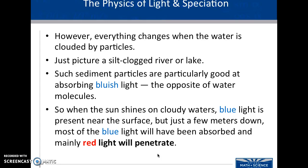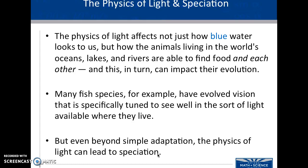This changes when the water is clouded by particles. Think about silt in a lake or sand in a pond — any sort of sediment that is going to absorb bluish light, which is the opposite of the water molecules. So when the sun shines on cloudy water, blue light is present near the surface, but just a few meters down most of the blue light will have been absorbed, and mainly red light will penetrate, which is why not all bodies of water look very blue. It's very dependent upon how much sediment is present in the water.